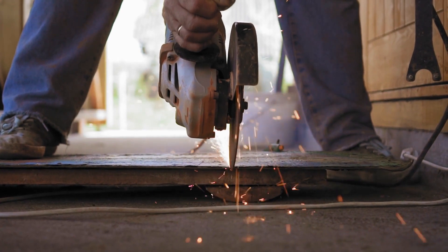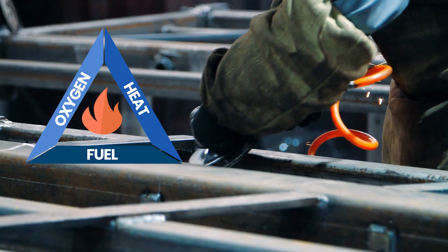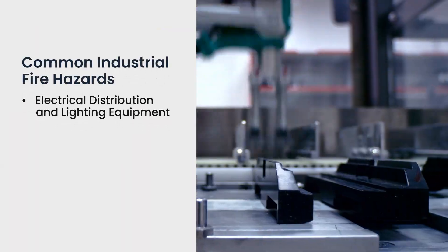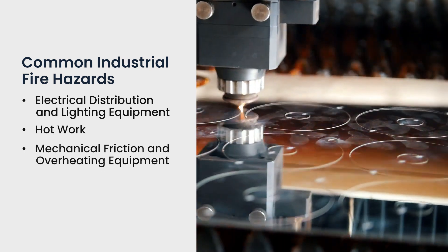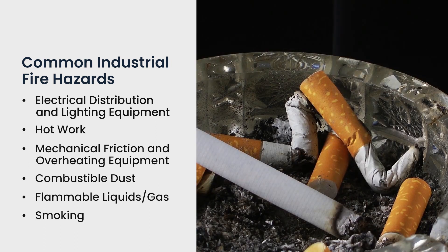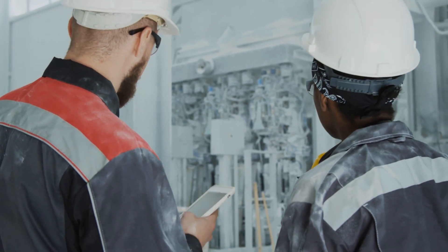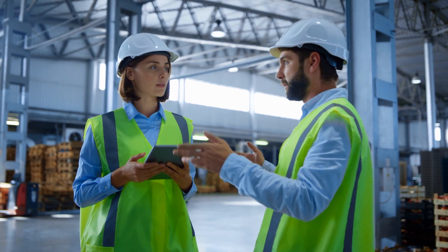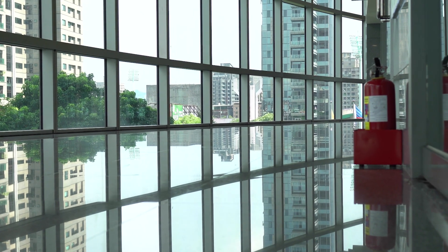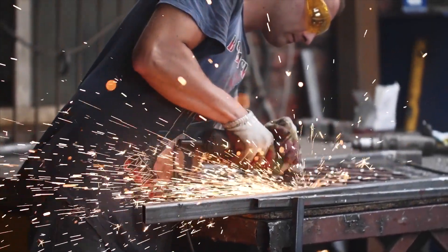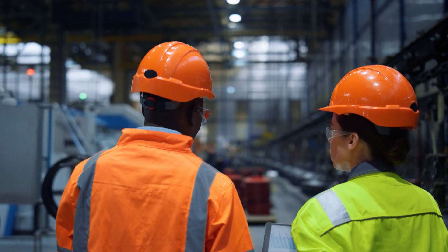As we wrap up this course on industrial fire safety, let's reflect on the key topics we've covered. We discussed fire basics, including the fire triangle of fuel, heat, and oxygen, as well as the five fire classifications and their relevance to extinguishing a fire. We looked at common fire hazards in industrial settings, including electrical systems, hot work, mechanical friction and overheating equipment, combustible dust, flammable liquids and gas, and appropriate smoking policies. We covered fire prevention best practices and how to conduct a job safety analysis. We discussed the importance of having and regularly practicing a fire emergency response plan, what it should include, and the OSHA requirements regarding exit routes. Lastly, we familiarized ourselves with the proper usage of portable fire extinguishers. By educating yourself on these important fire safety topics, you can contribute to a safer workplace. Remember, fire safety is a shared responsibility where everyone plays a vital role.